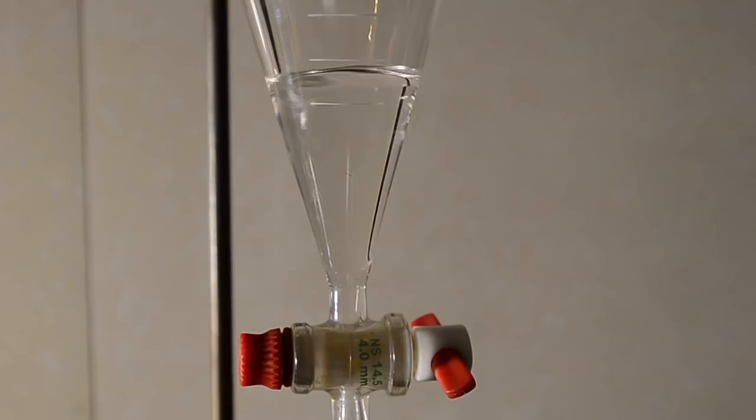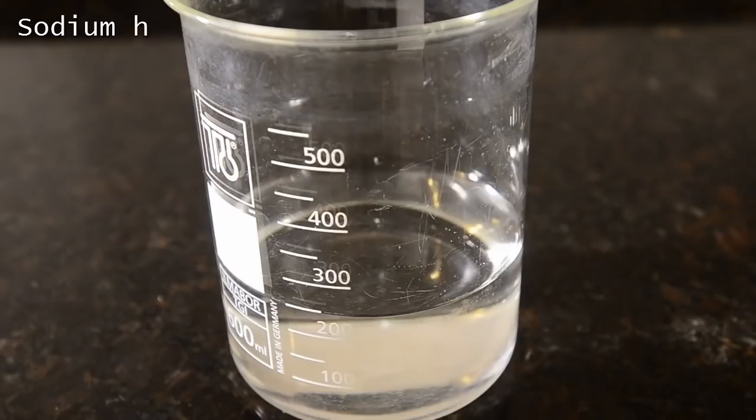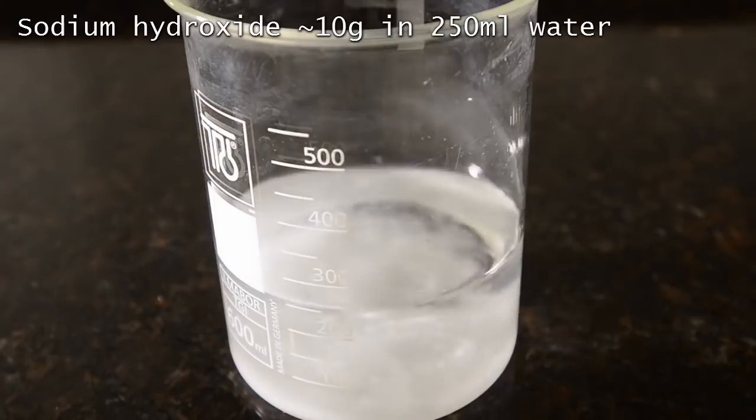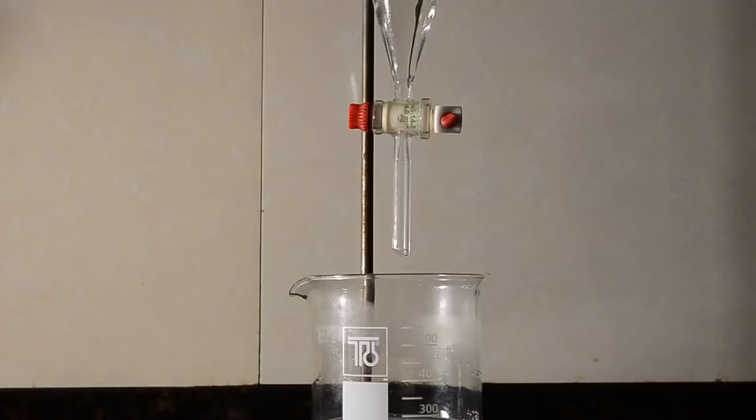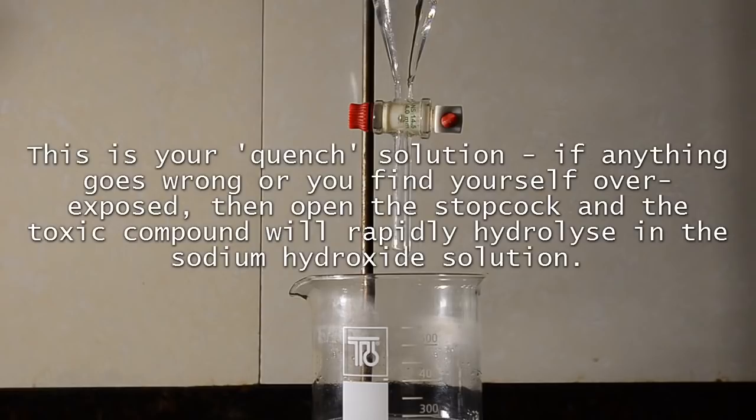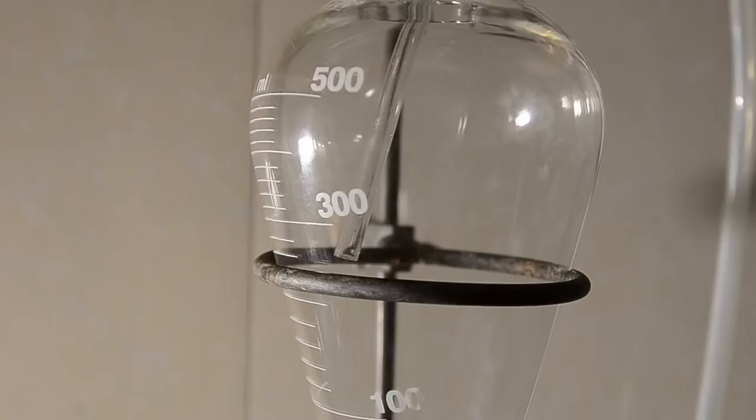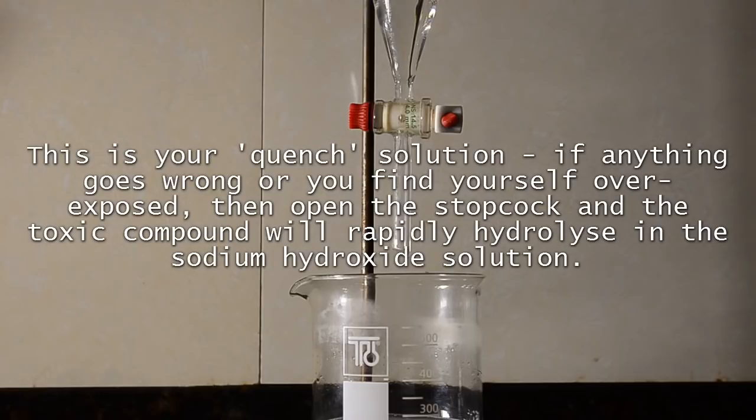Now take a large beaker containing around 250 ml of water and add sodium hydroxide to create a dilute solution. Around 10 grams is enough. Stir this to dissolve, and then allow to cool down. Place this underneath the separating funnel containing the acetone. This is your emergency quench system. In the event that anything goes wrong and you want to stop the reaction, simply open the stopcock and drain the reaction mixture into the beaker, hydrolyzing the dangerous bromoacetone.